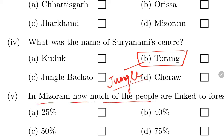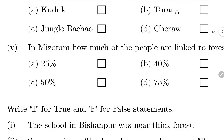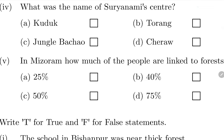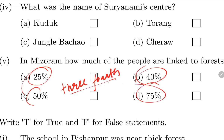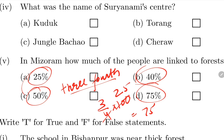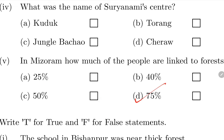In Mizoram, how many people are linked to the forest? The answer is 3/4 people. If you convert 3 by 4 into percentage: multiply by 100, divide by 4 - that gives 75%. So 75% of people in Mizoram are related directly or indirectly to the forest.